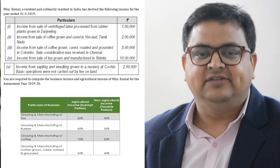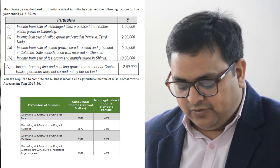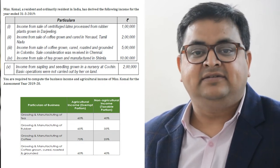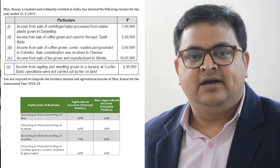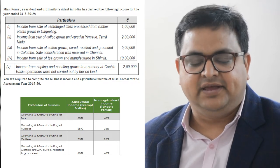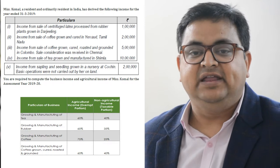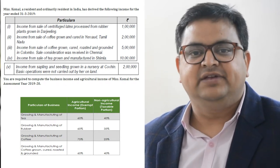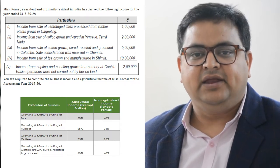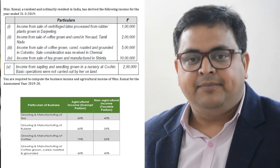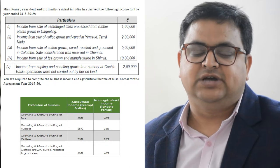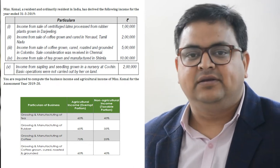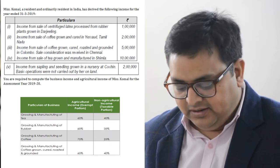The second point says income from sale of coffee grown and cured in Ooty, Tamil Nadu. Again, there is a business of coffee grown and cured. At the end of this video I will give you the percentage format so you can refer to it. For coffee grown and cured, we take 75 percent and 25 percent. Again, the larger portion is towards agriculture - 75 percent. So out of 2 lakh income, 75 percent, that is 1.5 lakh, will go to agriculture and the remaining 25 percent will go to business income. Note: if the coffee were grown, cured, and also roasted and grounded, the percentage would be 60:40. But here it is only coffee grown and cured, so we take 75 percent and 25 percent.